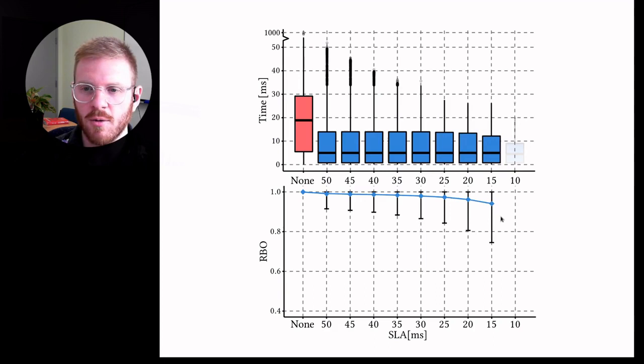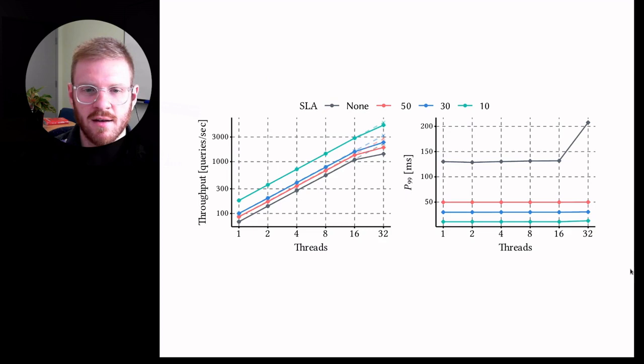We also looked at scalability and found that our approach does scale very well with the number of threads. The stricter the SLA, the more throughput in queries per second we can achieve, because the system is shedding the amount of work it needs to do.